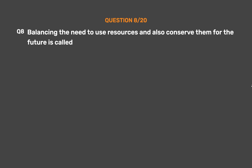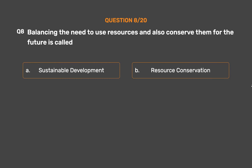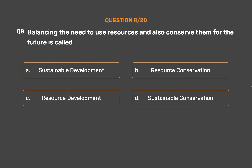Question number 8. Balancing the need to use resources and also conserve them for the future is called: Option A: Sustainable development. Option B: Resource conservation. Option C: Resource development. Option D: Sustainable conservation.